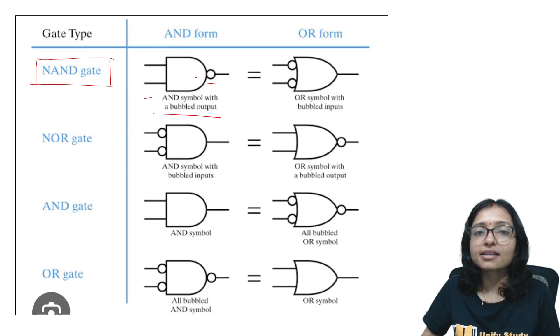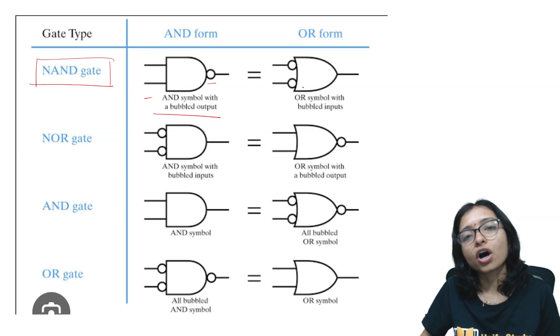It is just similar to OR with bubbled input. Why is it coming? Because NAND means AB whole bar. In De Morgan's law we can do that it is A bar plus B bar. So if I am giving bubble input here then if I am giving here AB then I am getting here A bar plus B bar.